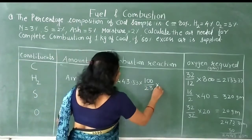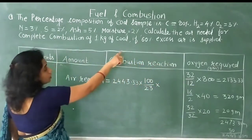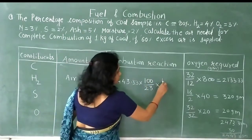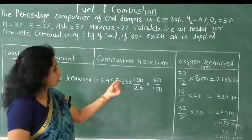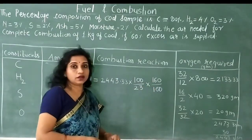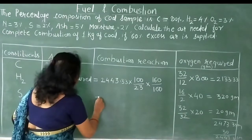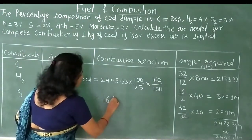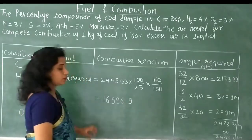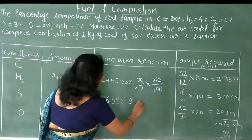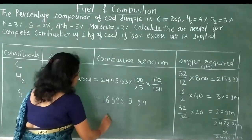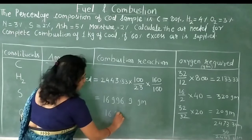One more calculation to add: 60% excess air is given. 60% excess means the total air factor is 160/100 = 1.6. So the final answer comes to approximately 16996.9 g, which when converted to kilograms gives 16.99 kg.